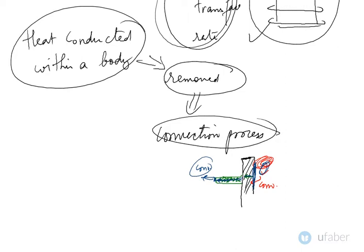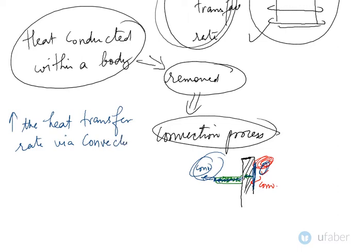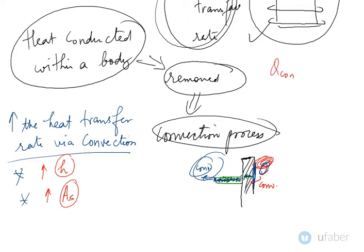If you want to increase the heat transfer rate via convection — since heat is eventually lost by convection — what are your options? Option one is to increase the convective heat transfer coefficient h. The second option is to increase the surface area, because convective heat transfer equals h times A_s times delta T. Since delta T is pretty much constant, you can only play with h and A_s.